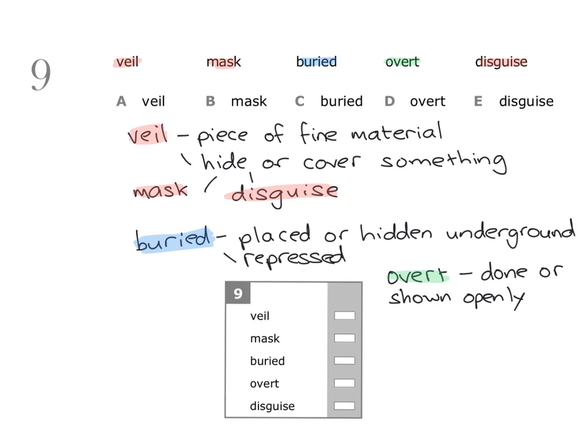The two words that do not go with these three synonyms are C: buried and D: overt. All you need to do is mark your answer on the answer sheet — a horizontal line next to the word buried and a horizontal line next to the word overt.